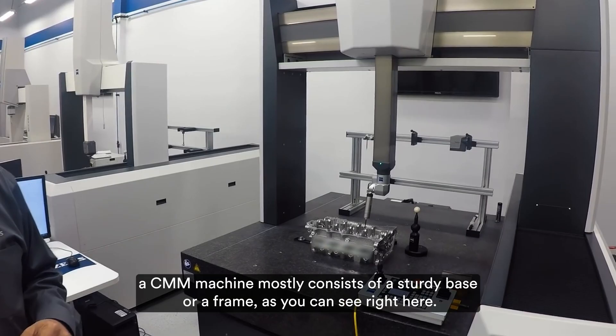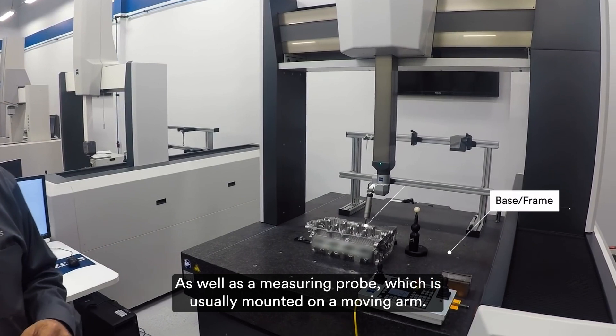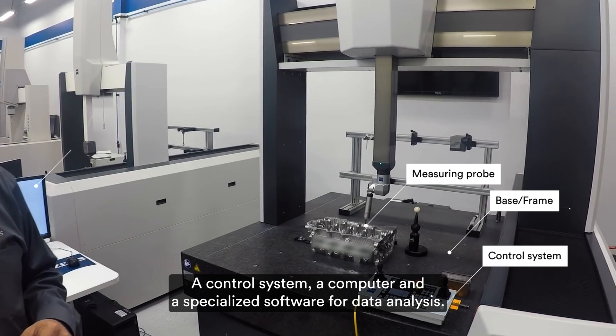So when it comes to components, the CMM machine mostly consists of a sturdy base or frame as you can see right here, as well as a measuring probe which is usually mounted on a moving arm, a control system, a computer and specialized software for data analysis.